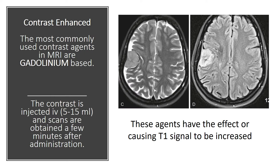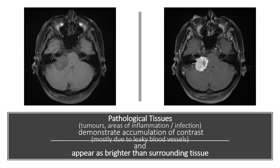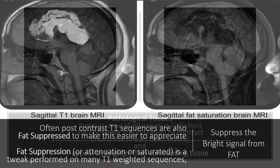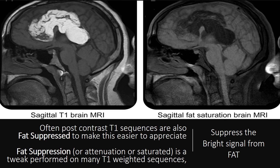Contrast-enhanced MRI: the most commonly used contrast agents in MRI are gadolinium-based. The contrast is injected intravenously and scans are obtained a few minutes after administration. These agents cause T1 signal to be increased. Pathological tissues demonstrate accumulation of contrast, mostly due to leaky blood vessels, and therefore appear brighter than surrounding tissue. Post-contrast T1 sequences are also often fat suppressed to make this easier to appreciate.